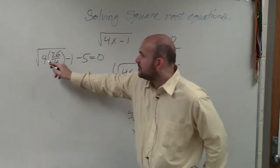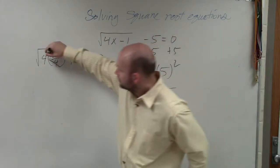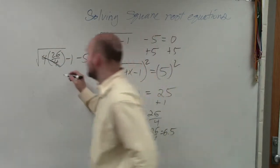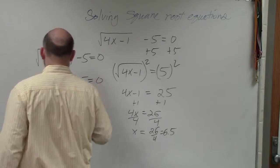Because what happens when I multiply 4 times 26 over 4? The 4s divide out, and I'm left with the square root of 26 minus 1 minus 5 equals 0.